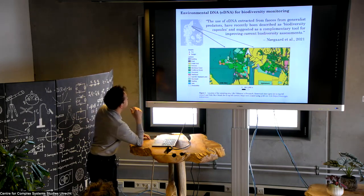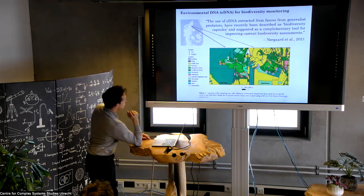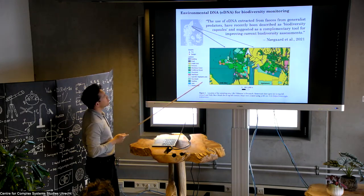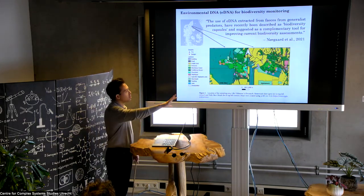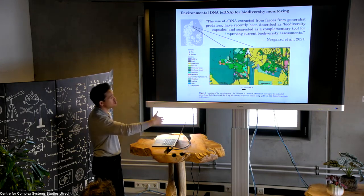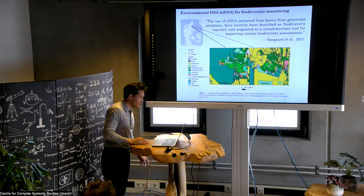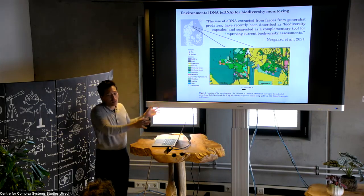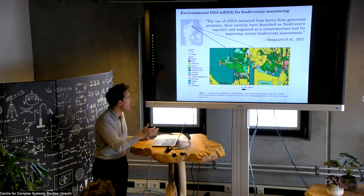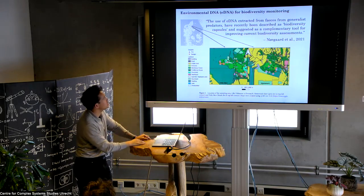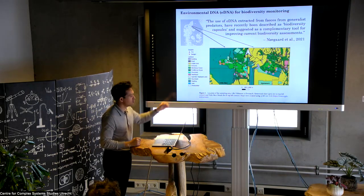Another use of molecular sequencing I think is really cool is for biodiversity monitoring. In a 2021 study by Norgaard, they used environmental DNA extracted from feces to map biodiversity across an urban environment. Using generalist predators — because they're more mobile and eat lots of different things — they showed that eDNA couldn't replace traditional biodiversity assessment approaches, which are still largely rooted in observation and counting, but it really enhanced and made more efficient the ability to perform biodiversity assessments, looking at how biodiversity varies across different land uses.